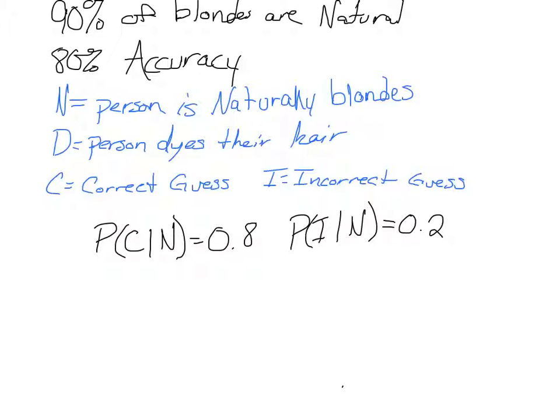This is actually that same problem you did. I went ahead and set it up the same way you had it. At first we have 90% of blondes are natural and in your own personal survey you had 80% accuracy. So then I used the same variables for naturally blonde and dyed blonde.